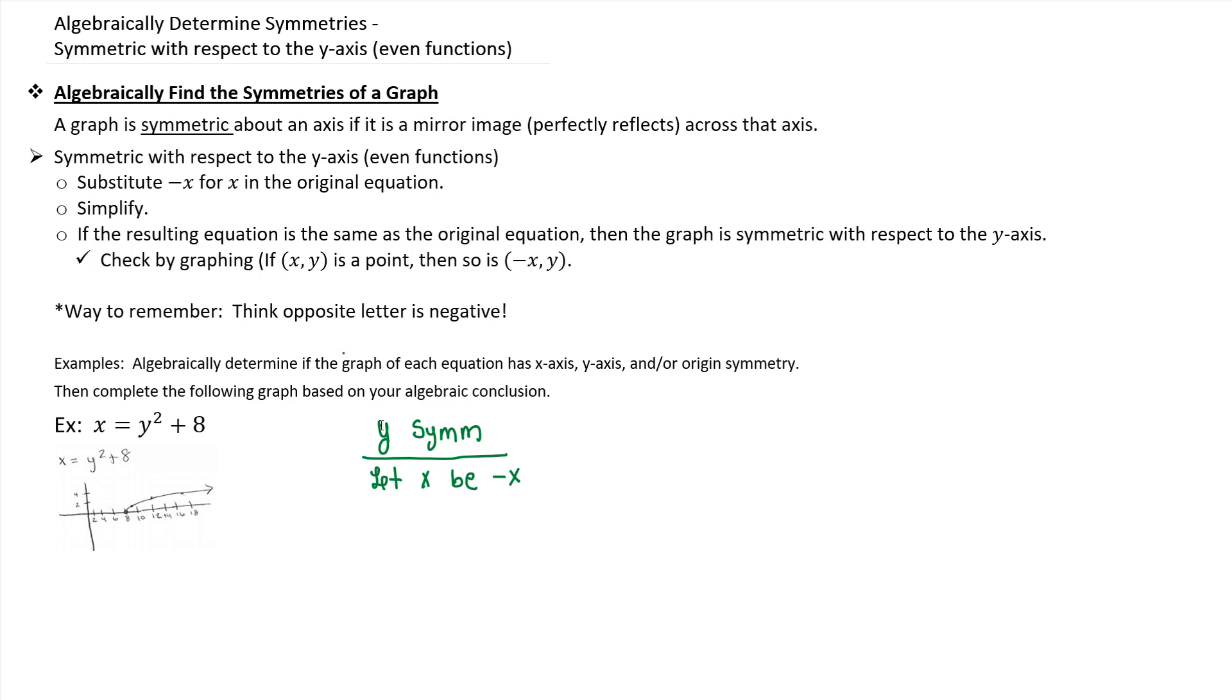So where there's an x, replace it with negative x. So my equation becomes -x = y² + 8. In order for the equation to be the same, both the right-hand side and the left-hand side would have to be identical. Notice that the right-hand side is identical, but the left-hand side is not. So therefore, you're not y-symmetric.